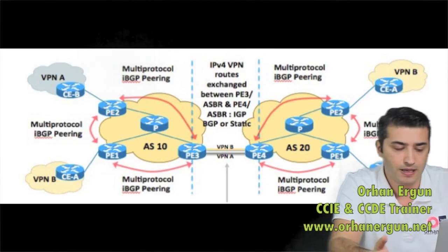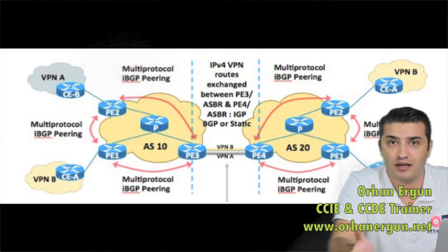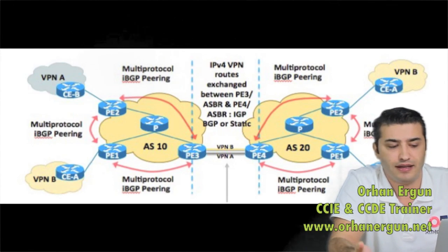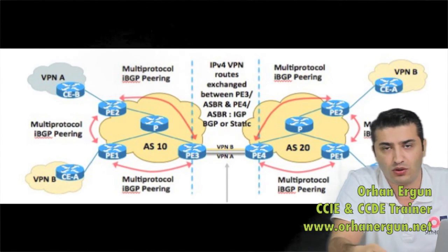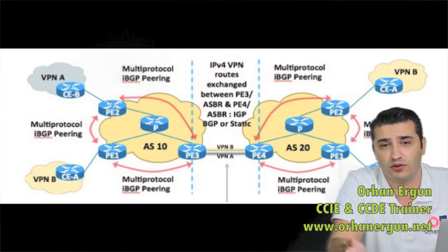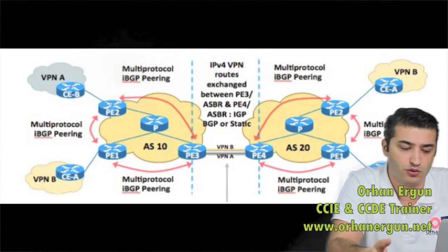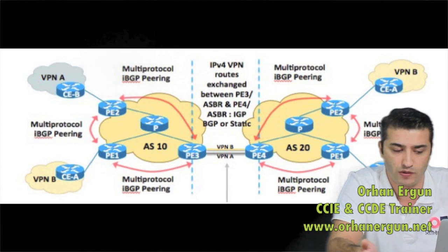In real life, what I have seen is that service providers are creating inter-AS option A because it is very simple to configure. But from the scalability point of view, if you have hundreds of customers it is not ideal. The good thing is you are not running MPLS or BGP at all between the service providers.